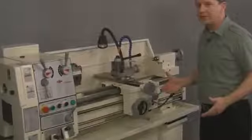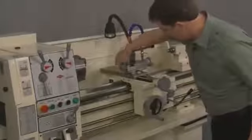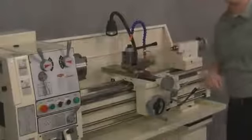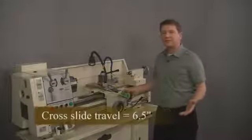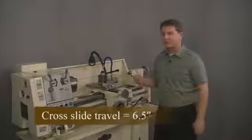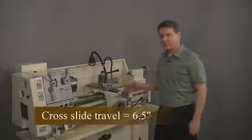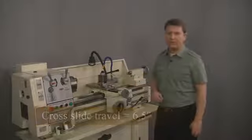The distance now between these two marks represents the total travel of the cross slide. All we have to do now is to measure between the two marks. And we can see that the distance looks to be about six and a half inches. This means we need to choose a lathe kit with a cross slide or X-axis travel of at least 6.5 inches.